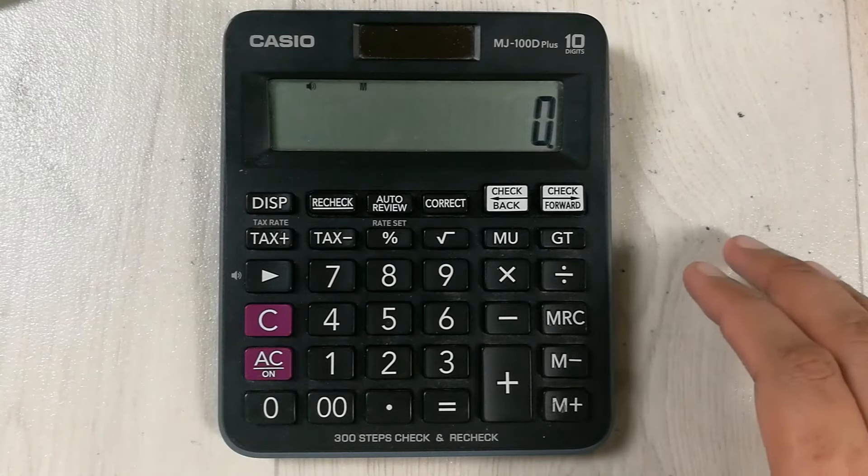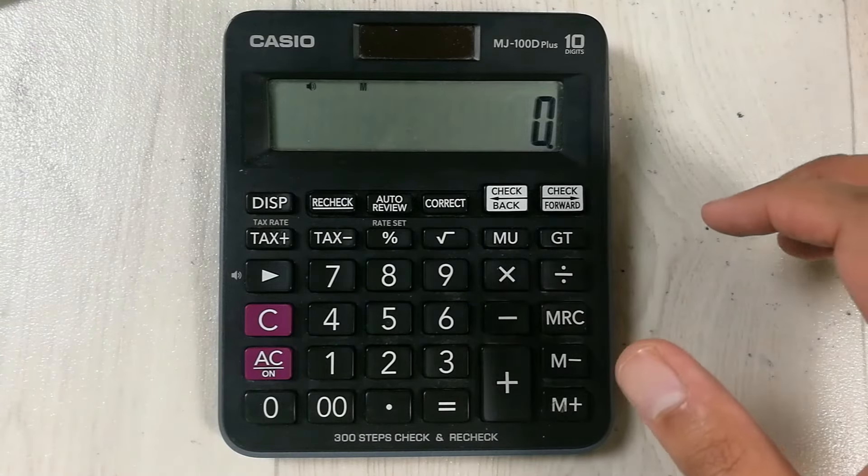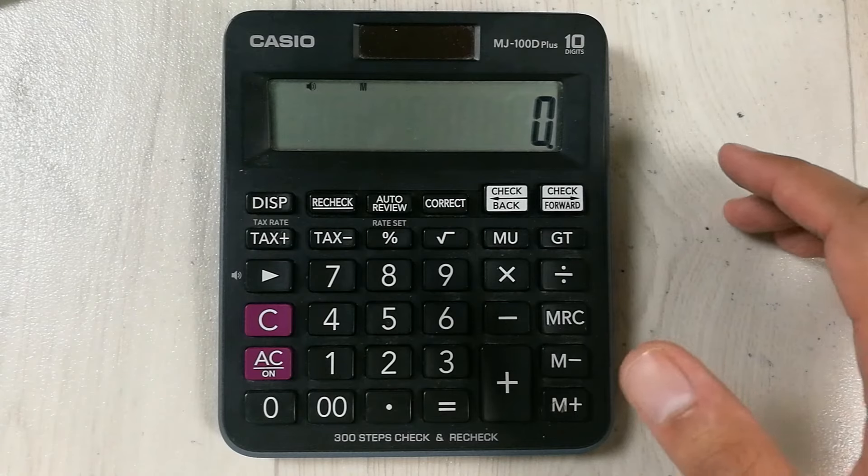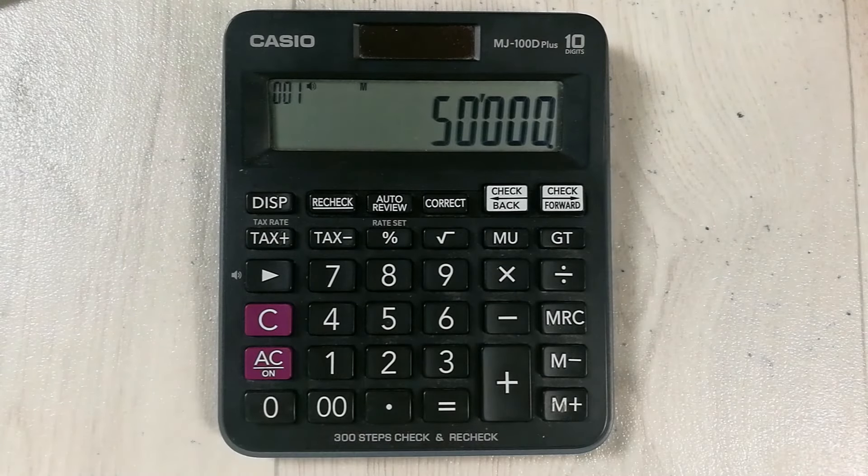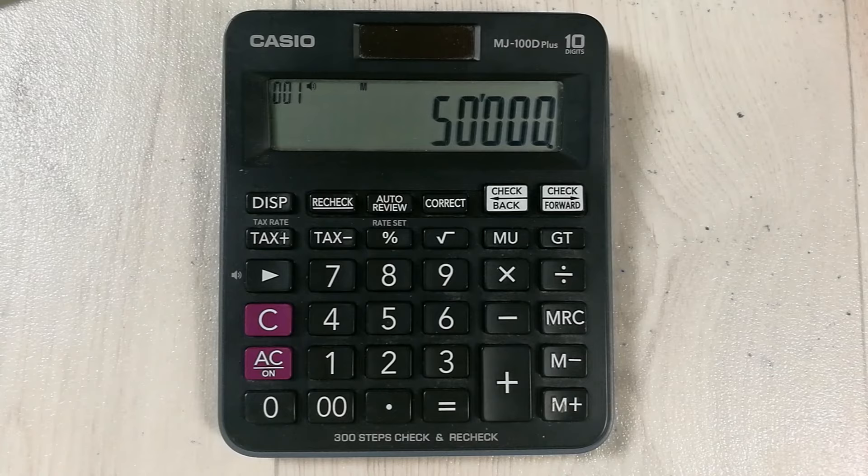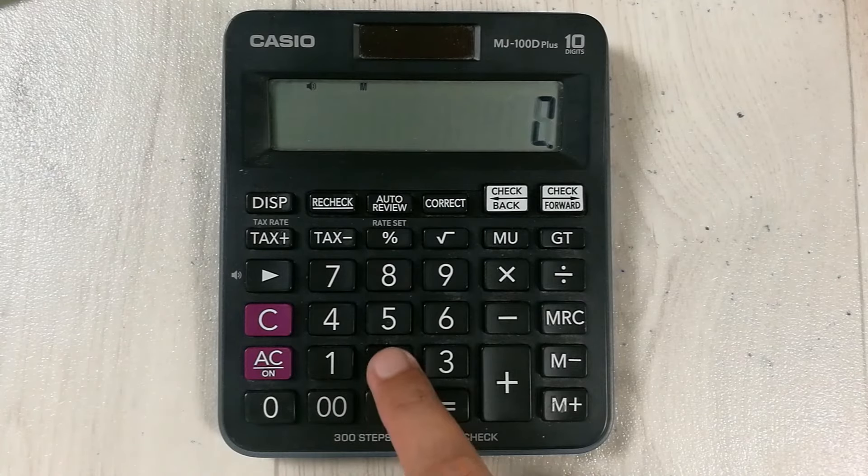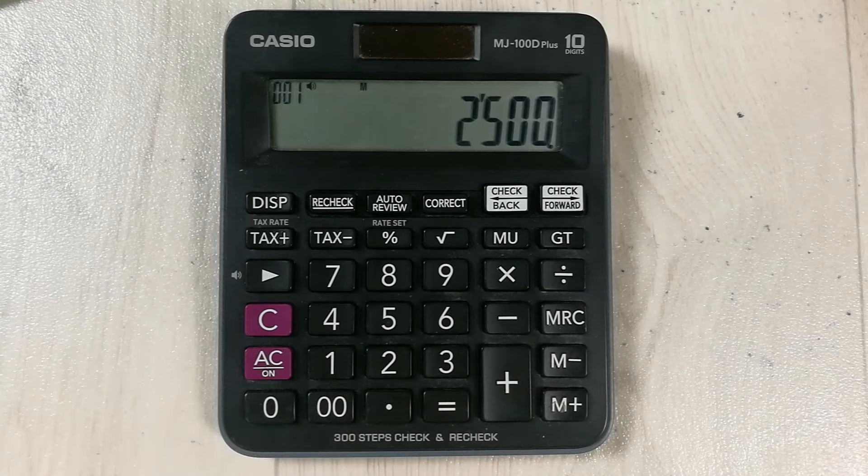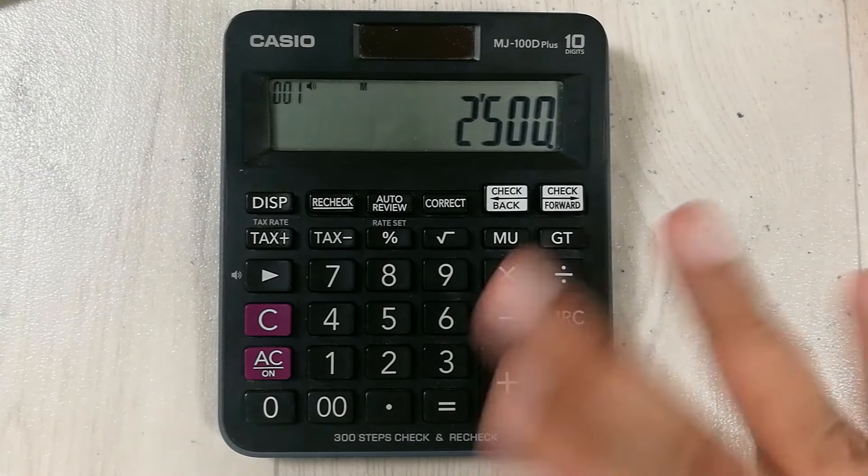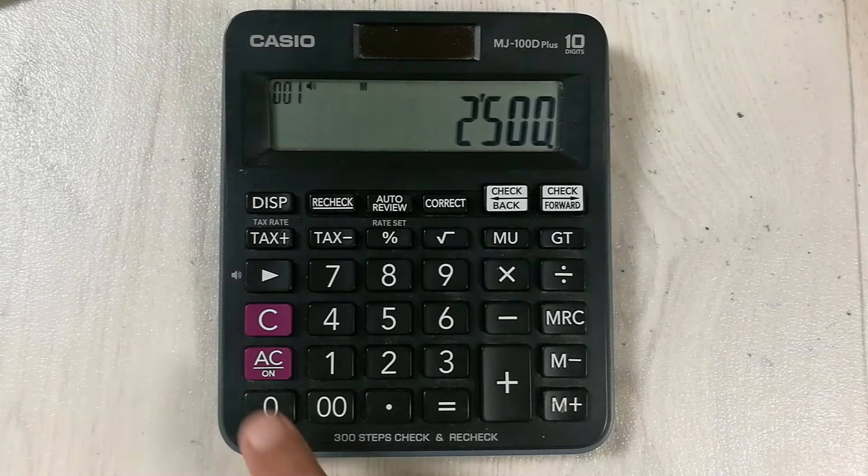Let's say your total sales are 50,000 and the selling area of your shop is 2500 square feet. So what we will do is we divide the 50,000 with this 2500. So 50,000 divided by 2500, then we press the equal button.